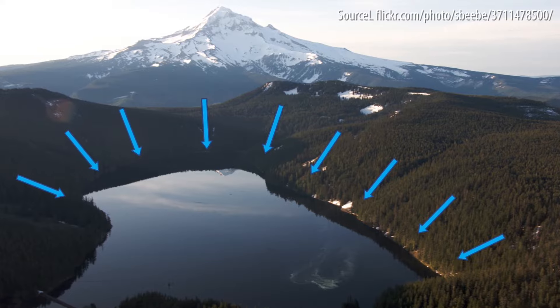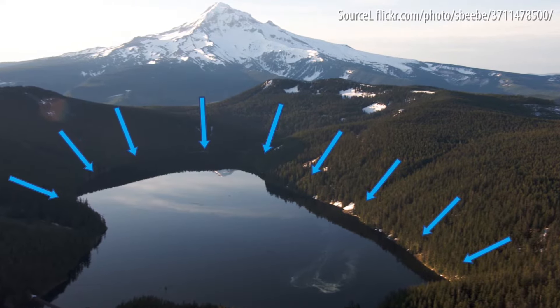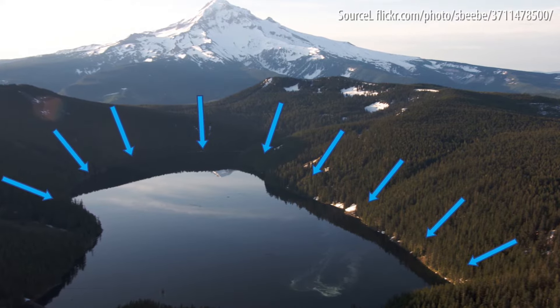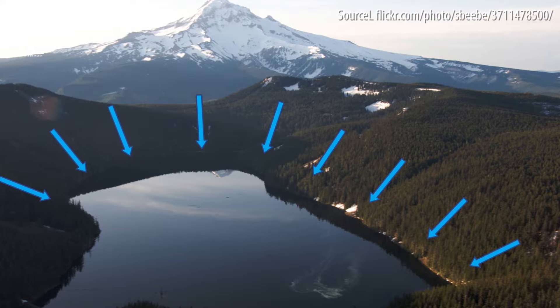If it rains on this area of land, the water is going to flow in the direction of the arrows and end up in that lake, which is called Bull Run Lake. This picture is just a little piece of the Bull Run watershed, which we'll talk about more a little later on.